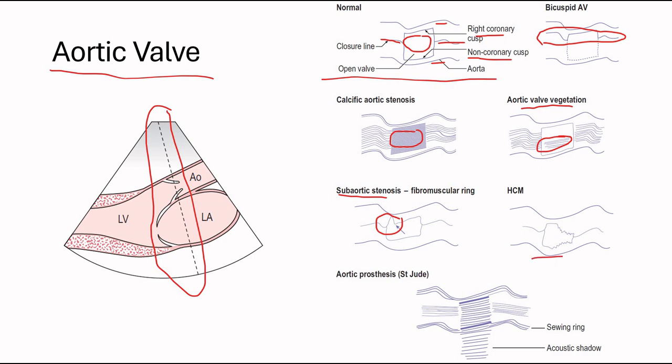And in HOCM, it looks like this. And that's because if there's obstruction at the LVOT, then the leaflets will close earlier compared to normal. And there is less blood flow there during the obstruction. And here is aortic prosthesis, St. Jude's. You get this acoustic shadow down here.